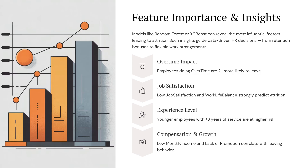Now that our model is trained, let us see what factors influence employee attrition the most. Models like Random Forest or XGBoost help identify key drivers that lead employees to leave. Overtime plays a big role — employees doing extra hours are twice as likely to quit. Low job satisfaction and poor work-life balance are also strong predictors. Younger employees, especially with less than three years of experience, face a high risk. And finally, low income or lack of promotion opportunities often push people to move on.